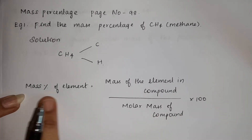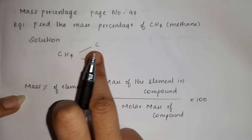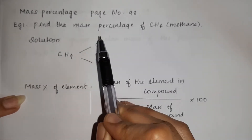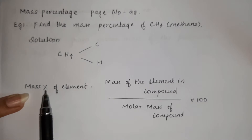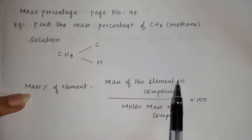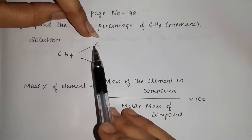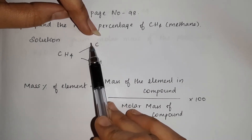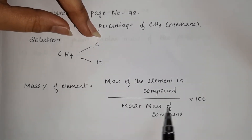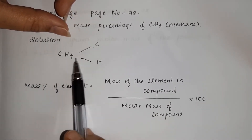The mass percentage of the element is one of the two elements. You will have a percentage of these two elements. For example, the carbon percentage of the element is equal to mass of the element in a compound, divided by molar mass of the compound. This is CH4, so this is a compound.